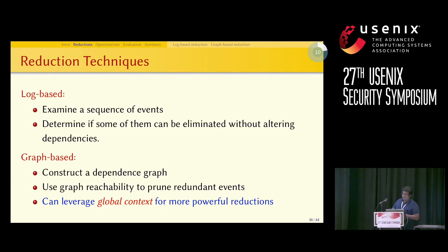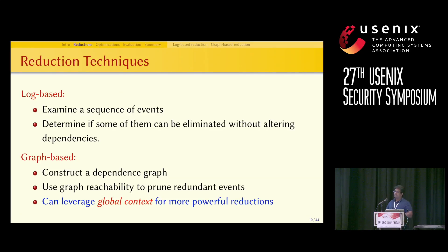Reduction techniques can be categorized into two categories: log-based and graph-based. Log-based techniques examine a sequence of events and, depending on local information, decide if events can be eliminated without affecting dependencies. Graph-based techniques construct a dependence graph and use graph reachability to prune redundant events, leveraging global context for more powerful reductions.